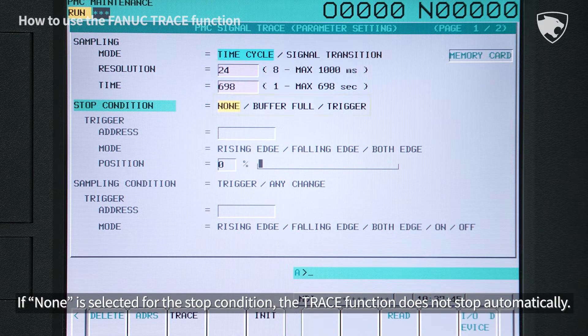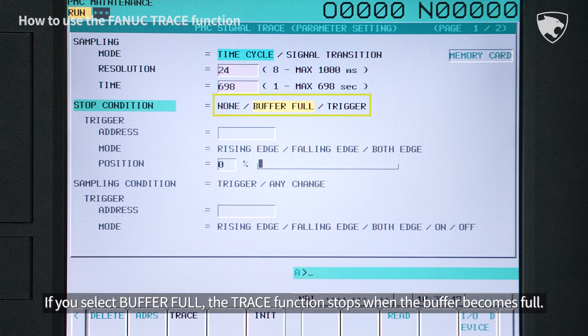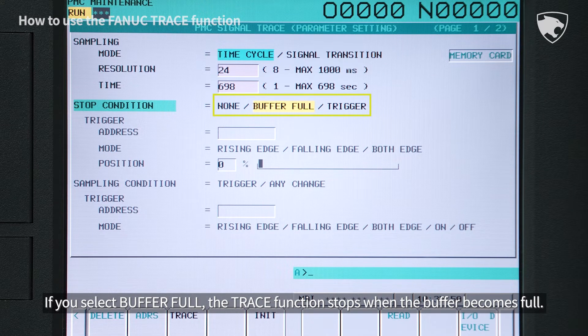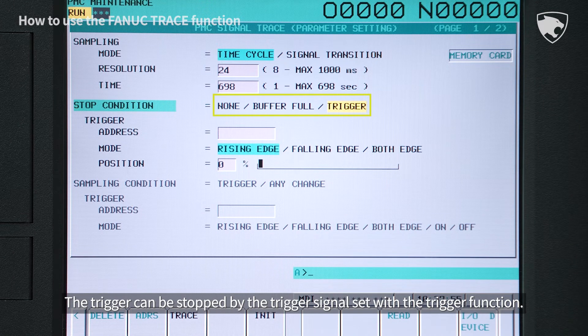If none is selected for the stop condition, the trace function does not stop automatically. If you select buffer full, the trace function stops when the buffer becomes full. The trigger can be stopped by the trigger signal set with the trigger function.